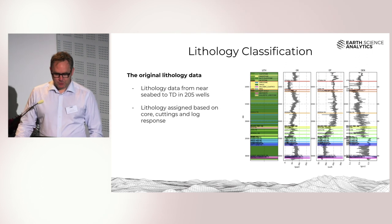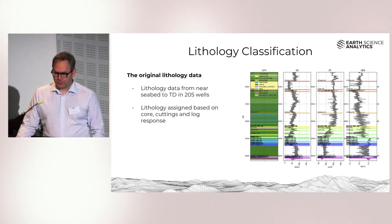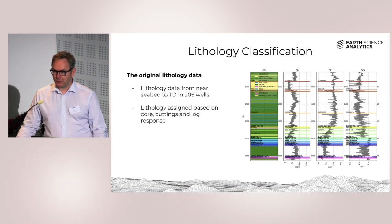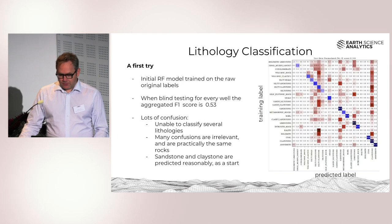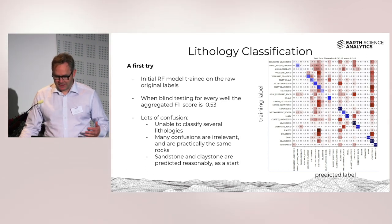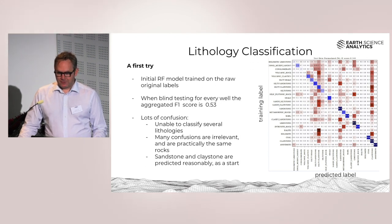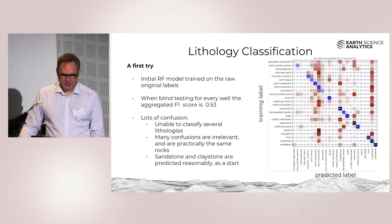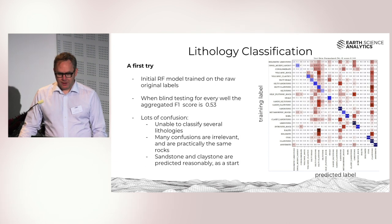Now let's move on to the problems, because they're always more interesting. There are some issues when it comes to classifying lithology. We have lithology data from near the seabed all the way down to total depth in 205 of these wells. The lithology is assigned based on core where available, based on cuttings information, and based on wireline log information. This labeling of facies is done by human experts doing as good as they can, but it's a difficult and huge job, so the occasional mistake will obviously sneak into the dataset. When we ran this through a random forest model, we got an F1 score of only 0.53.